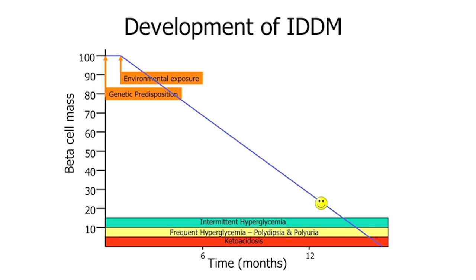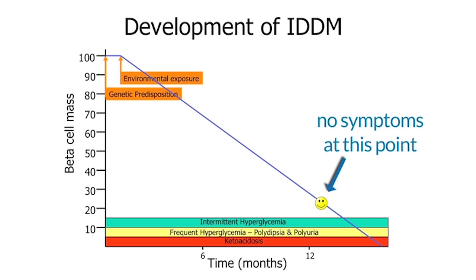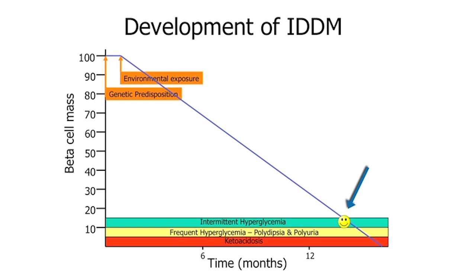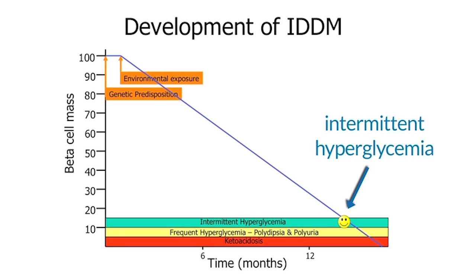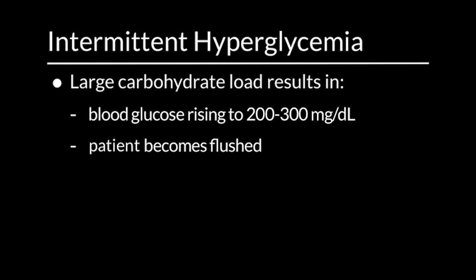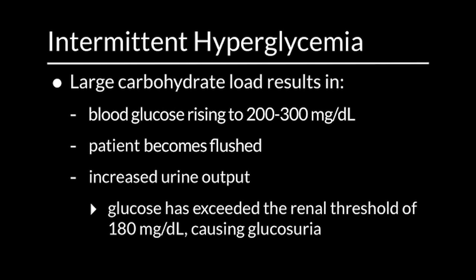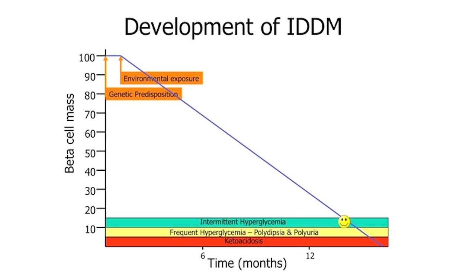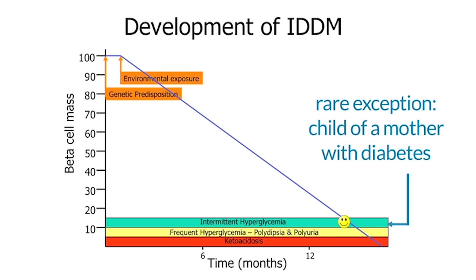When she's at the earliest point shown here, there are no symptoms whatsoever — she has enough insulin to cover meals and basal production. When she moves to the next step, she has intermittent hyperglycemia. When she has a large carbohydrate load — an ice cream sundae, for example — blood sugar may go up into the 200–300 range. She may get a little flush, and she may have increased urine output because her glucose has exceeded the renal threshold of 180 milligrams per deciliter. Almost nobody gets diagnosed in that particular period, with the rare exception of a child of a mother with diabetes.